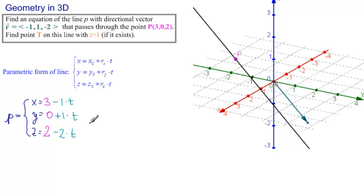So we get x equals 3 minus t, y equals t, and z equals 2 minus 2t. That is an equation of the line P.